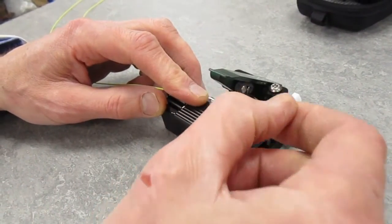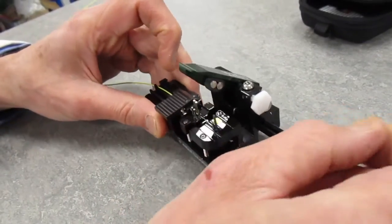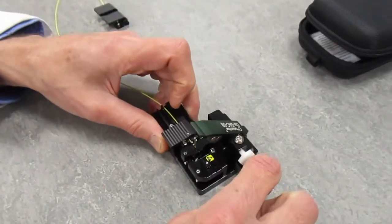And that's the cleave. The fiber end comes off, can be disposed of in the conveniently located holder.